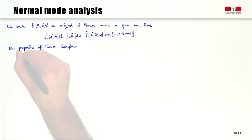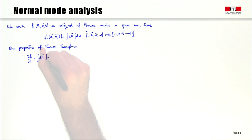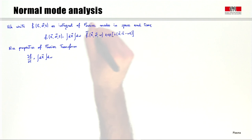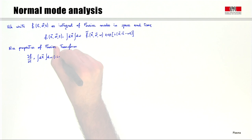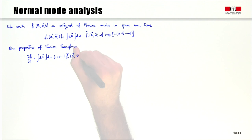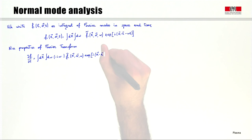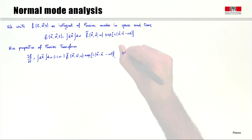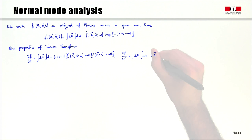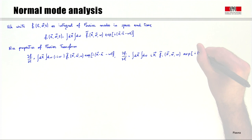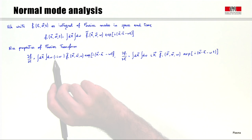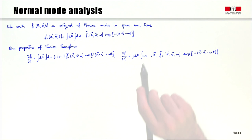The Fourier transform has very useful properties. The time derivative of f1 gives the integral over k and omega of minus i-omega times f1(k, v, omega) times the exponential. Similarly, the spatial derivative becomes the integral over dk d-omega of ik times f1. In other words, d/dt becomes minus i-omega and d/dr becomes ik.